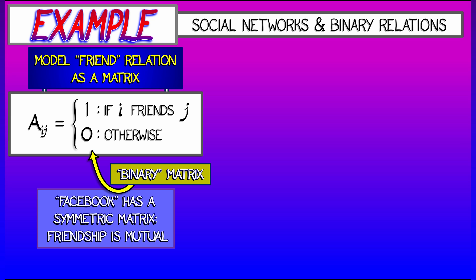Friendship is mutual — if I'm friends with you, then you have to be friends with me as well. This means a_ij equals a_ji.